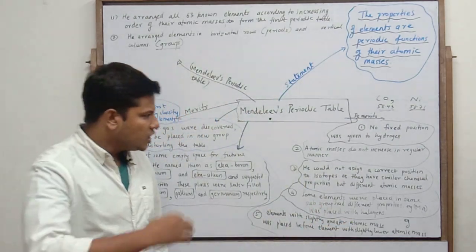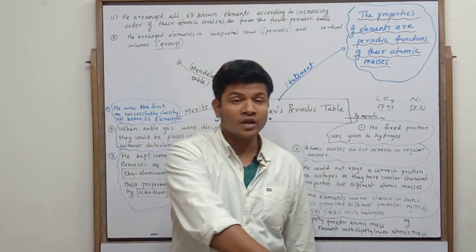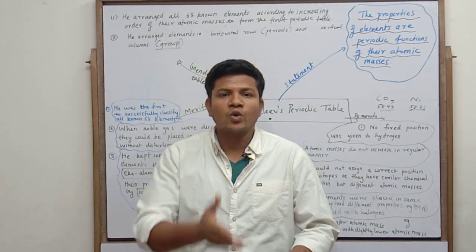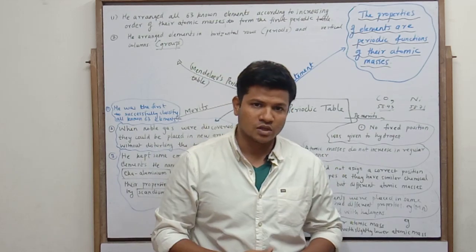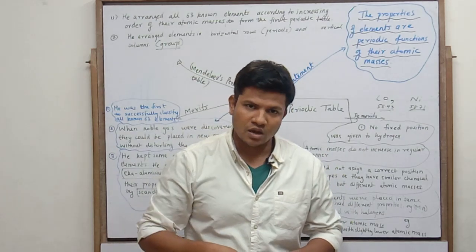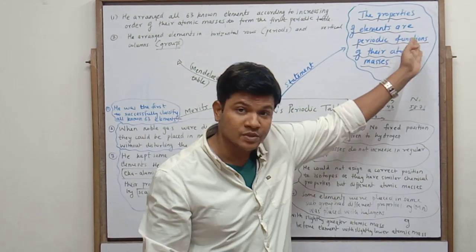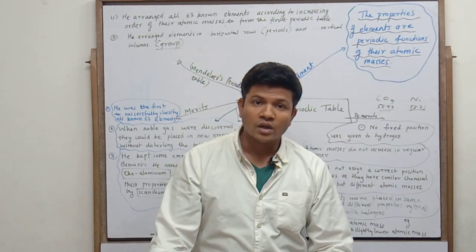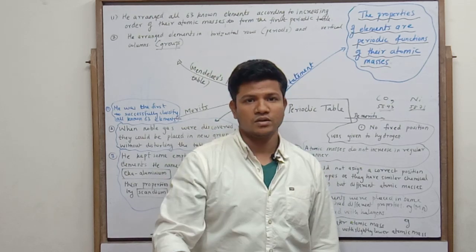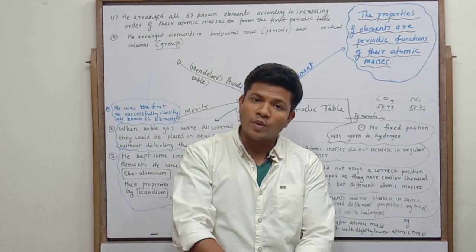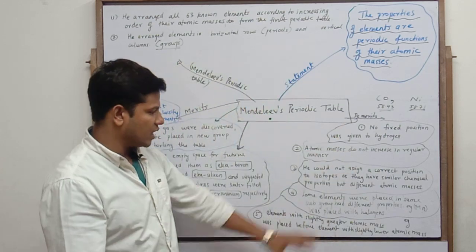Third demerit: he could not assign correct positions to isotopes. His table was based on atomic mass — increasing atomic mass. Isotopes have the same atomic number but different atomic masses. So according to Mendeleev's law, isotopes should be placed at different positions in the table. But Mendeleev kept them at the same position, thereby contradicting his own law — this was the third problem of Mendeleev's periodic table.